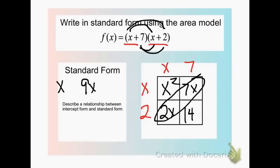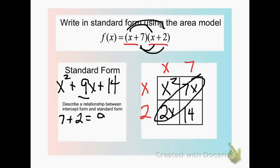We bring down our x squared in front, so it reads x squared plus 9x, then bring over our 14. Notice that 7 plus 2 gives us 9 — our middle term — and 7 times 2 is 14, which gives us the constant term in standard form. That is the relationship between intercept form and standard form.